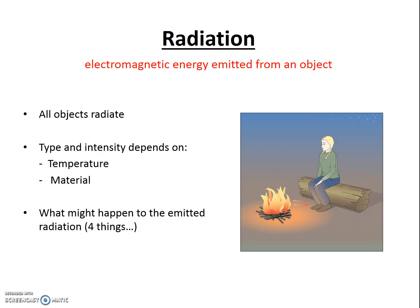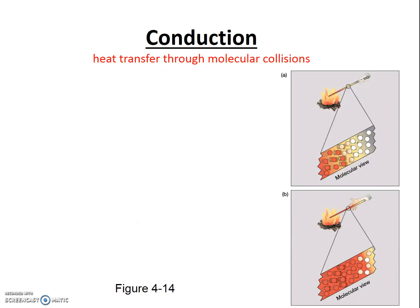Let's move on and discuss conduction. Conduction is heat transfer through molecular collisions. Heat is transferred as the molecules collide. Higher temperature molecules have more kinetic energy at the atomic level — temperature is the average kinetic energy of the atoms of a substance. The atoms of higher temperature objects vibrate more vigorously, and when they collide with adjacent cooler molecules, they pass along their kinetic energy, causing those molecules to heat up. In this diagram, a metal poker in a fire conducts heat up the rod, eventually to your hand.